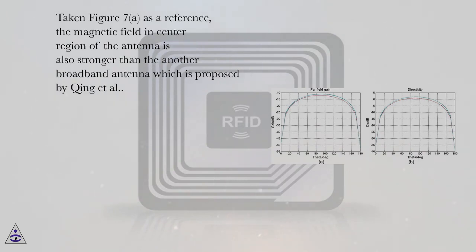Taking Figure 7a as a reference, the magnetic field in center region of the antenna is also stronger than another broadband antenna which is proposed by Ching et al.